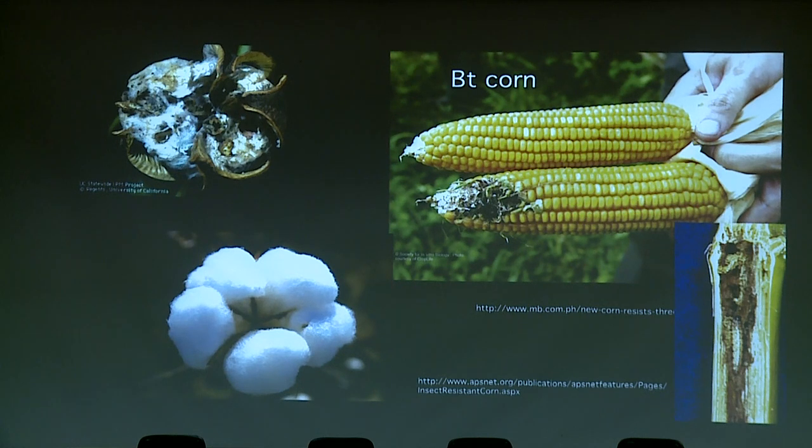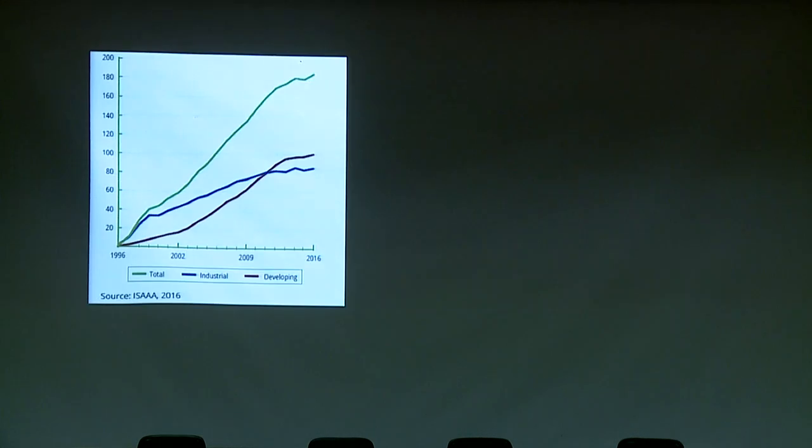And almost 60% for cotton. BT cotton, as you probably know, is the only genetically modified crop in wide use here in India. Since GM crops were introduced in 1996, they've been adopted by farmers faster than any technology in the history of humanity. Today GM crops are grown by roughly 18 million farmers in 26 countries on 470 million acres. Importantly, 90% of the farmers growing them are smallholder resource-poor farmers, and the profits have gone roughly equally to developed and developing country farmers.